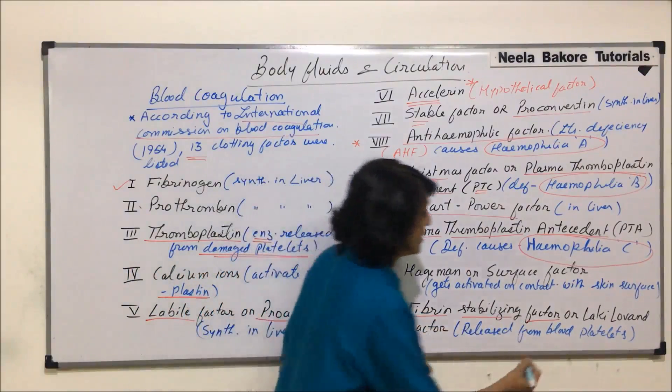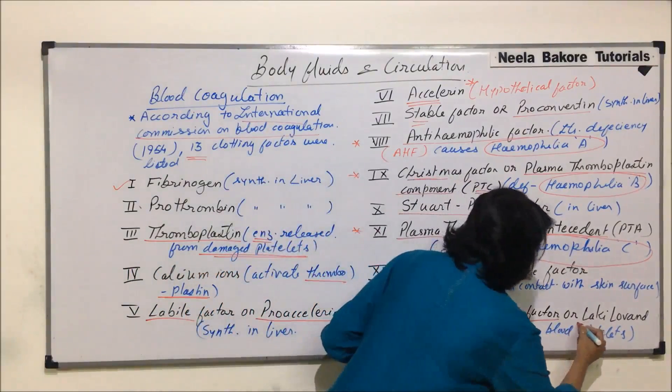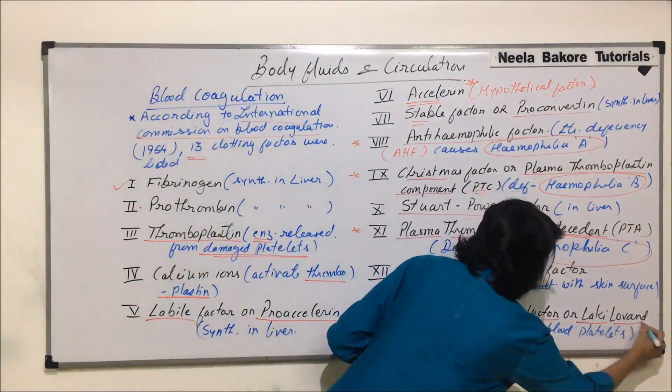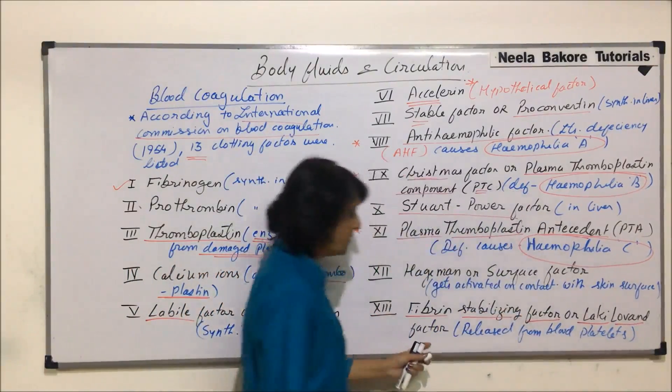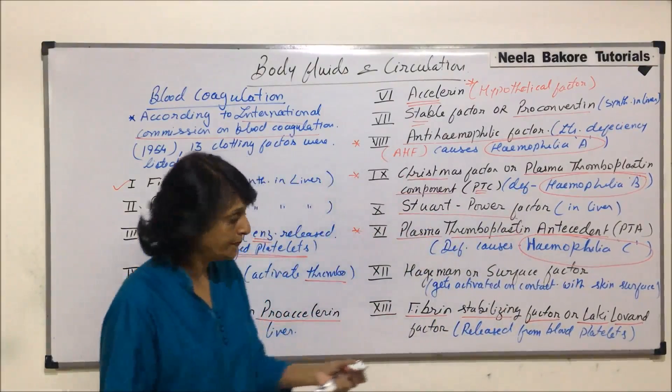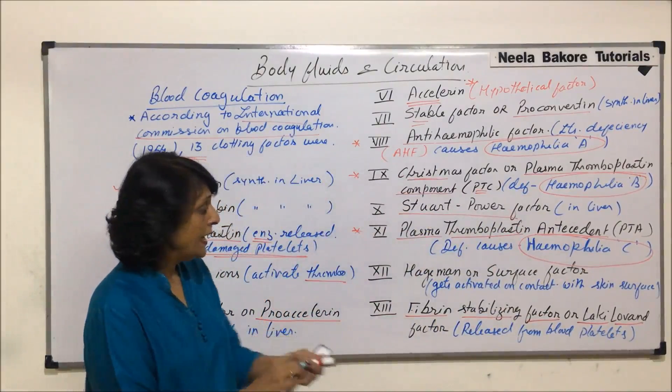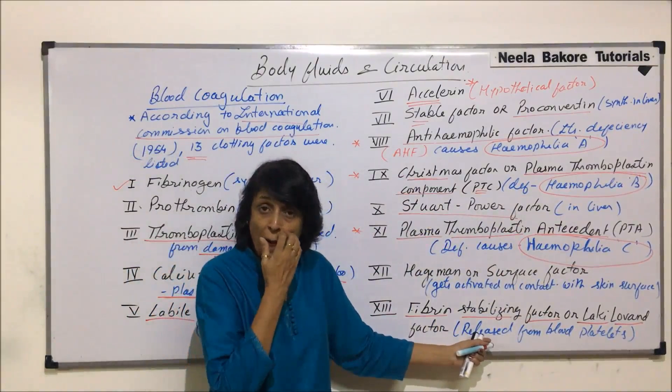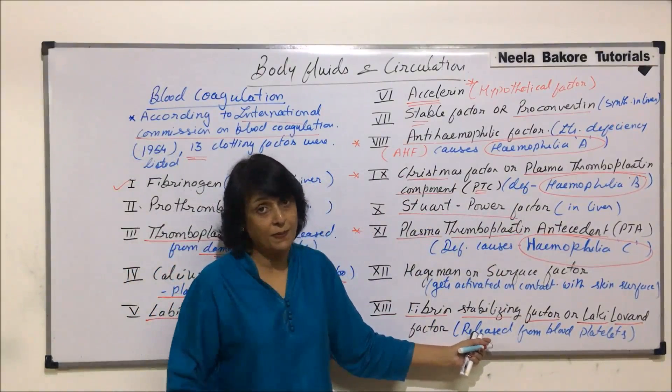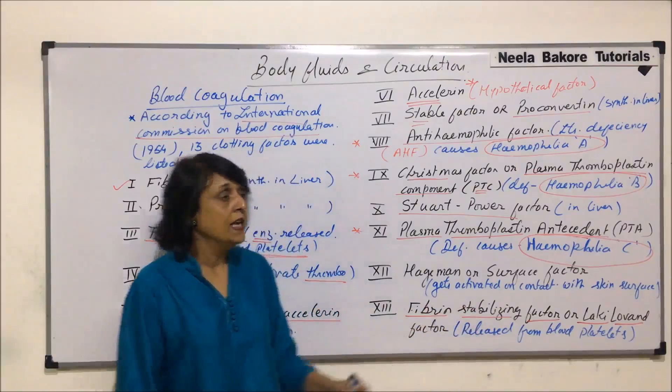One more name is given to factor XIII — it is also called Laki-Lorand factor. It is also released from the blood platelets.